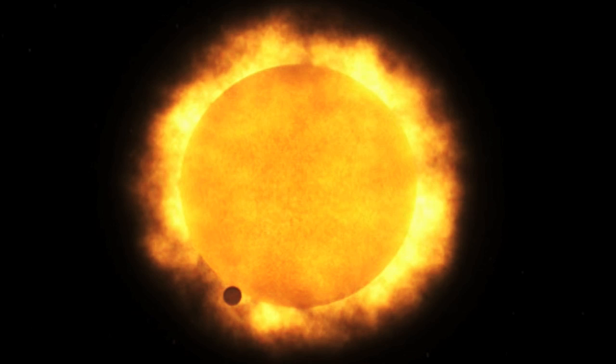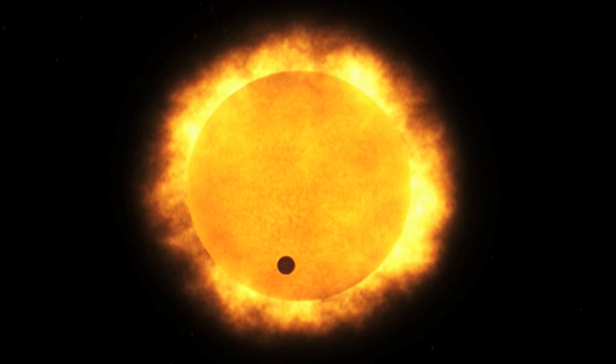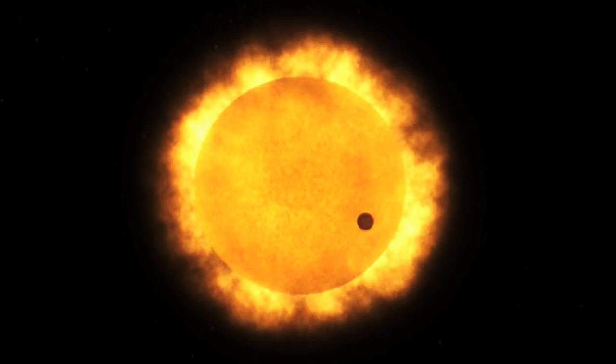The transits of Venus are one of the rarest of predictable astronomical events. During a 243-year period, only four sightings of the transit may be observed before the cycle begins again.